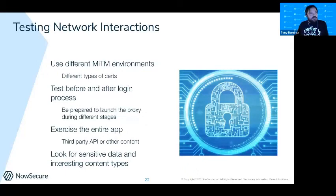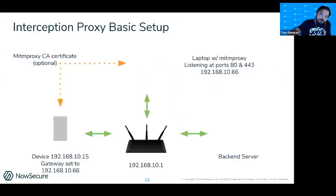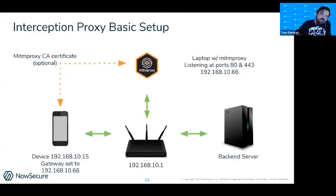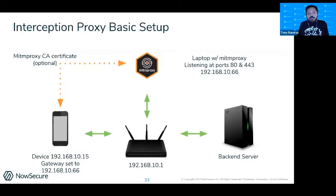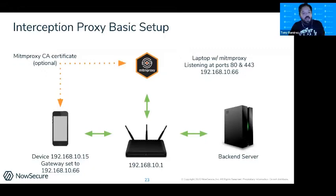If you want to set this up at home — grab your phone and try it after the call — install the mitmproxy CA on your device. You're intercepting traffic on your MacBook before it reaches the backend server. There are other popular proxies like Charles, but ultimately it comes down to your preference. There's no right tool, but most people know the right tools for this type of testing.